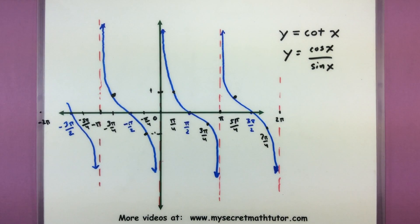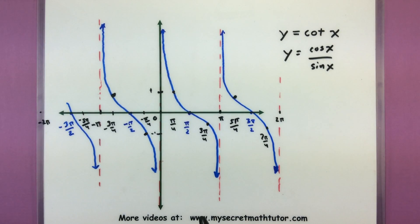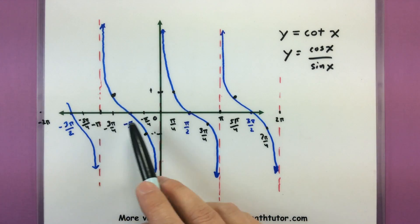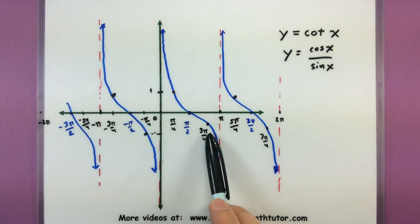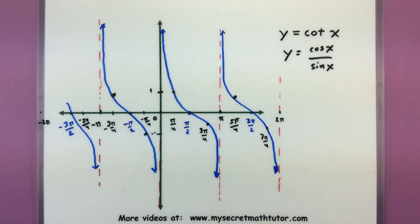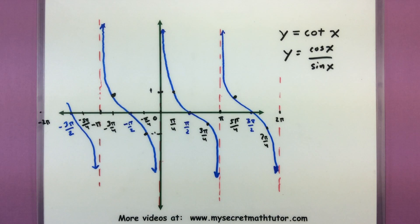So, very similar process. When building cotangent: first, find your asymptotes wherever sine is equal to zero. Then figure out where the function is zero — that happens wherever the top (cosine) equals zero, or you can just chop the intervals in half. Then draw out your graph, making sure that for cotangent it's flipped the other way compared to tangent. Finally, add in the key points at one and negative one for a more accurate picture. If you want to make this graphing process even better, it's a really good idea to know the graphs of cosine and sine well — check out my other video on sine and cosine. If you'd like to see more videos, please visit MySecretMathTutor.com.